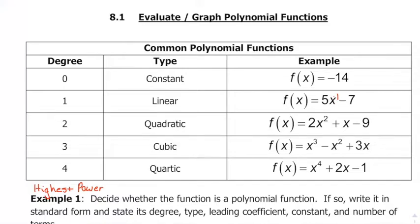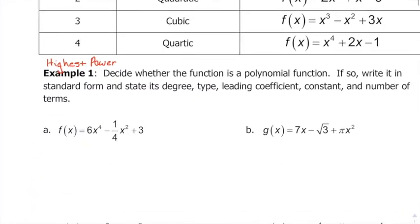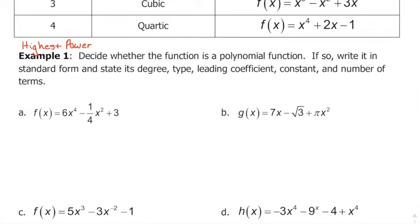And if it doesn't have an x, then we say the degree is going to be 0. So those are all of your different classifications. On these examples, we're going to determine whether the following is a polynomial function. If so, we're going to write it in standard form and then state its degree, type, leading coefficient, constant, and the number of terms.